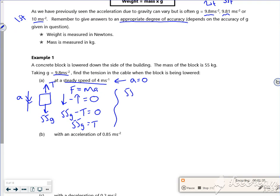55 times 9.8 for the tension, rounded to two significant figures, gives 540 newtons. Let's look at the next one.